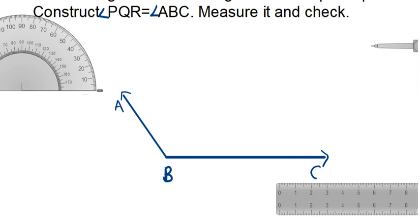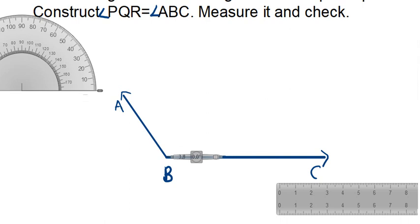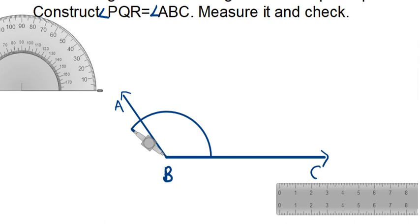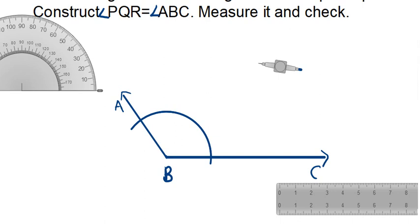First, take the compass and keep its steel end at point B as the center. With the moving part at a suitable radius, we move across the entire angle and make an arc that cuts both ray BA and ray BC. We name the intersection points — this one is C and this one is D.